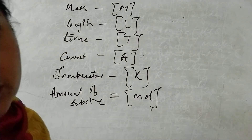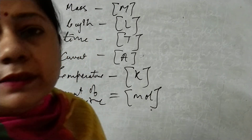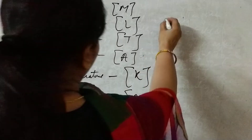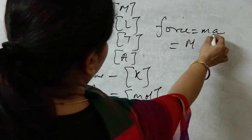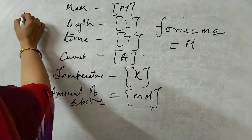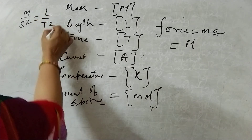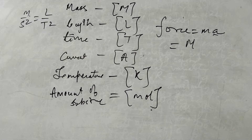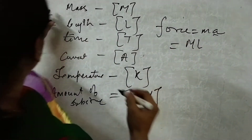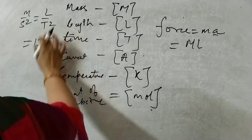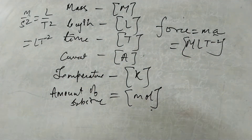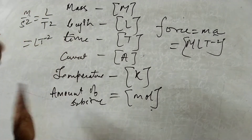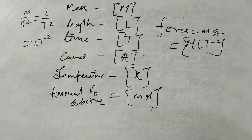How to write a dimensional formula? Take force as an example. Force is mass into acceleration, so it is M × (meter per second squared). Meter is length L, second is time T, so acceleration is LT⁻². Therefore the dimensional formula for force is MLT⁻². This is the general way of representing force.